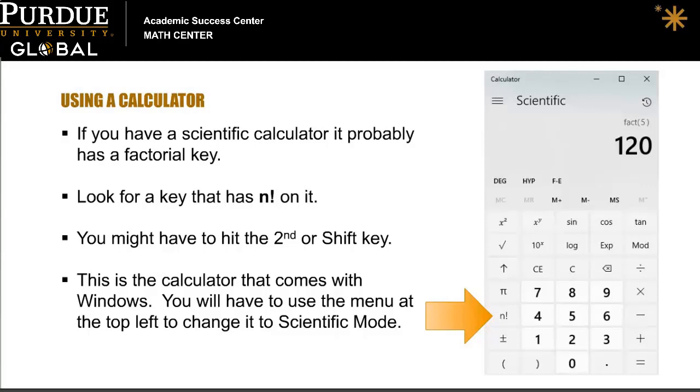As an example, this is the calculator that comes with Windows. And you can see that it has a factorial key on it. You will have to use the menu at the top left to change it to scientific mode for the factorial key to appear.